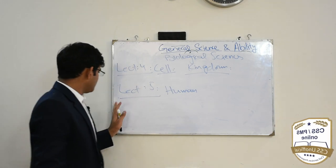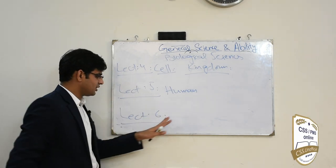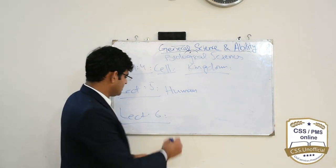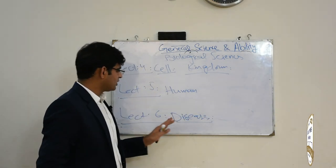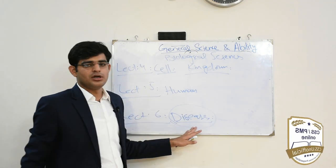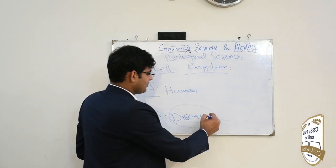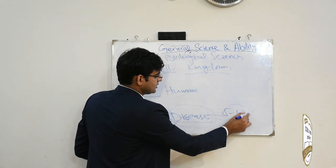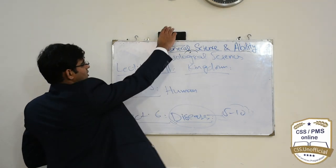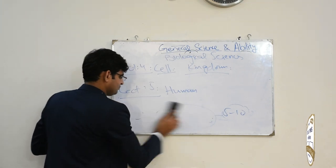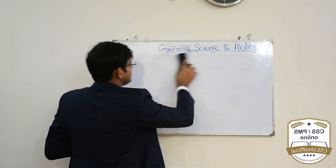Lecture 6 میں ہم exclusively diseases کو study کریں گے۔ یہ biological sciences میں سب سے important topic ہے جس سے past papers میں ہمیشہ 5 سے 10 نمبر کے questions ضرور آتے ہیں general science کے portion میں۔ اس طرح تین lectures میں biological sciences ختم ہو جائے گا۔